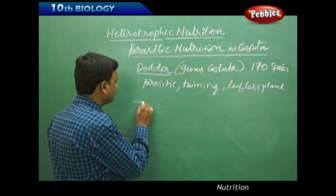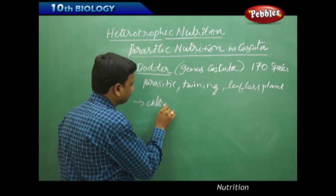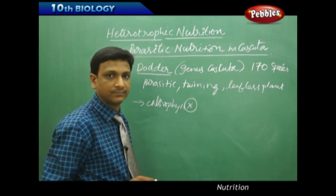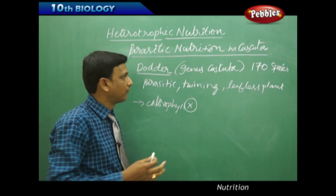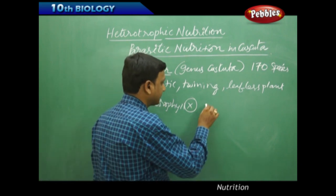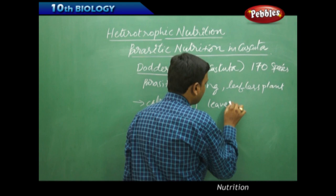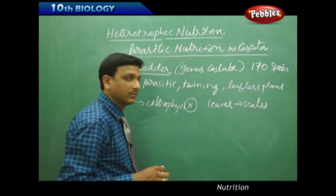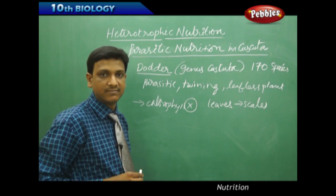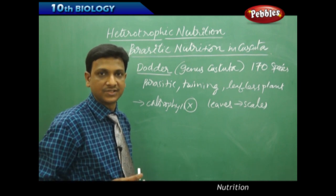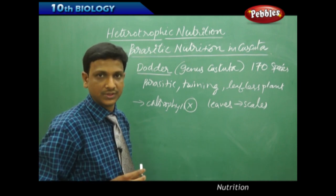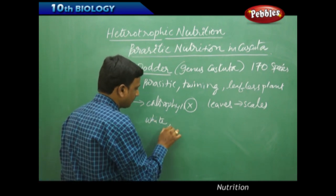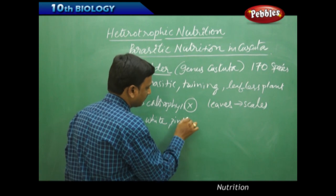If you observe the dodder plant structure, they do not have chlorophyll - chlorophyll is absent. There are no leaves also - the leaves are reduced to scales. They are very thin, string-like plants which are coiled around the host, and their color may vary from white, pink, orange, sometimes brown.